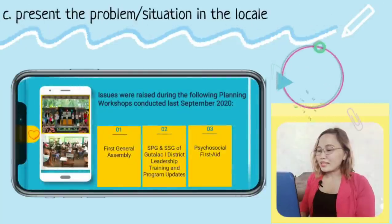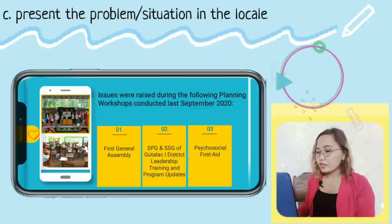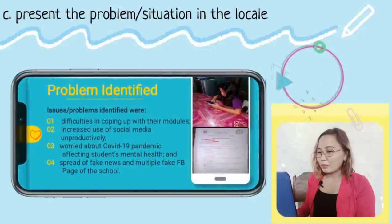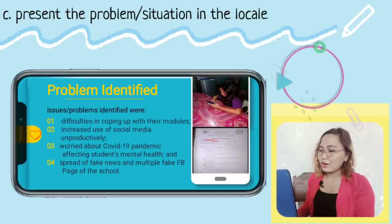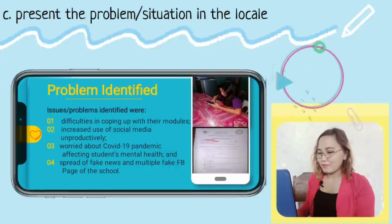We consulted the students and identified specific crisis or problems in our schools. The problems were identified during the first general assembly, during the SPG and SSG Gutalaquan district leadership training and program updates, and during the administration of the psychosocial first aid. The problems identified include: one, difficulties in coping up with their modules; two, increased use of social media unproductively; three, worry about the COVID-19 pandemic affecting their mental health; and four, the spread of fake news and multiple fake Facebook pages of the school.